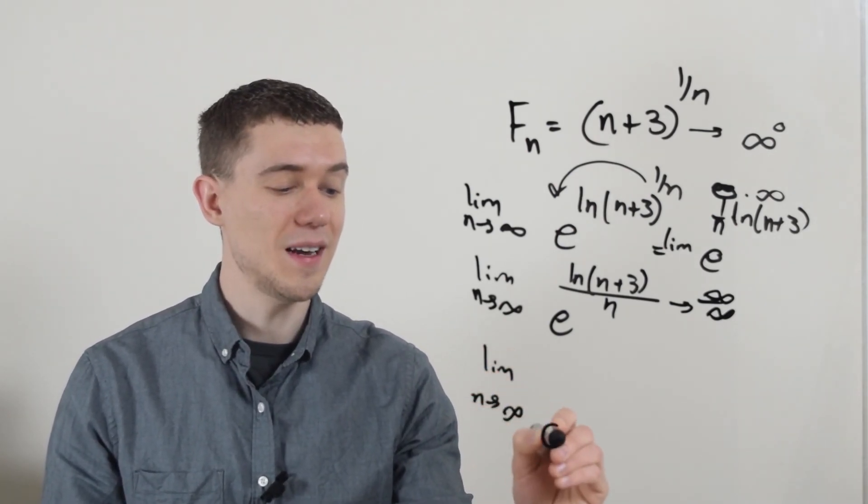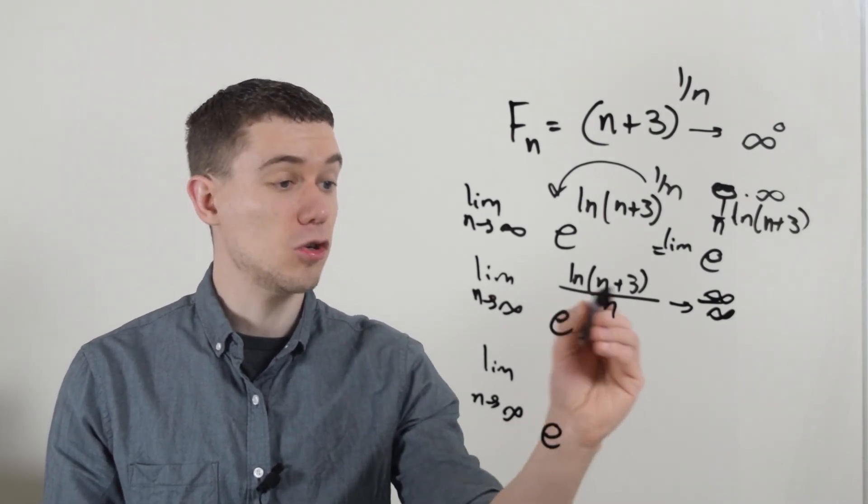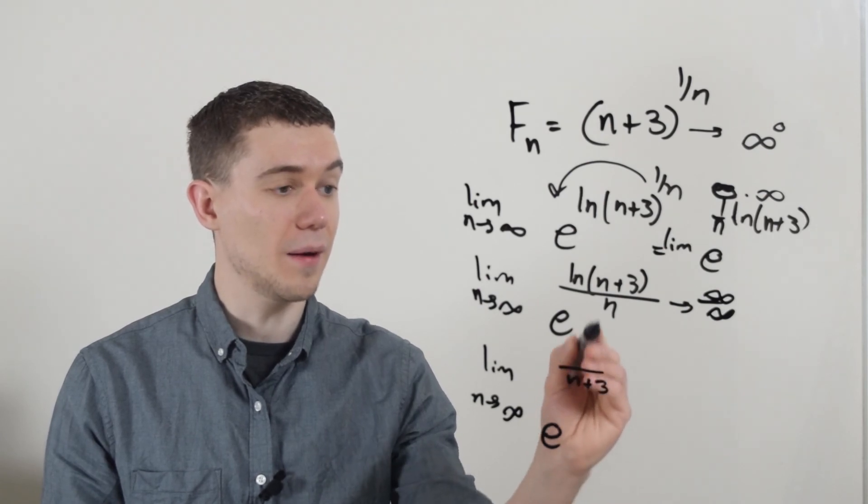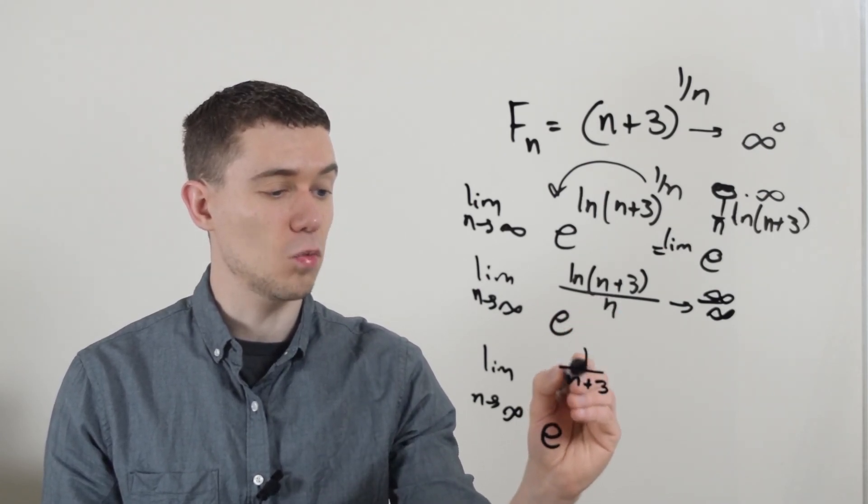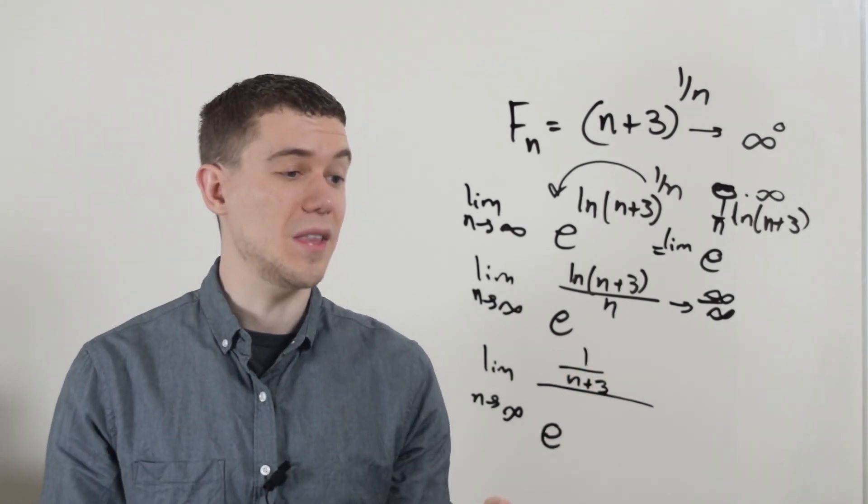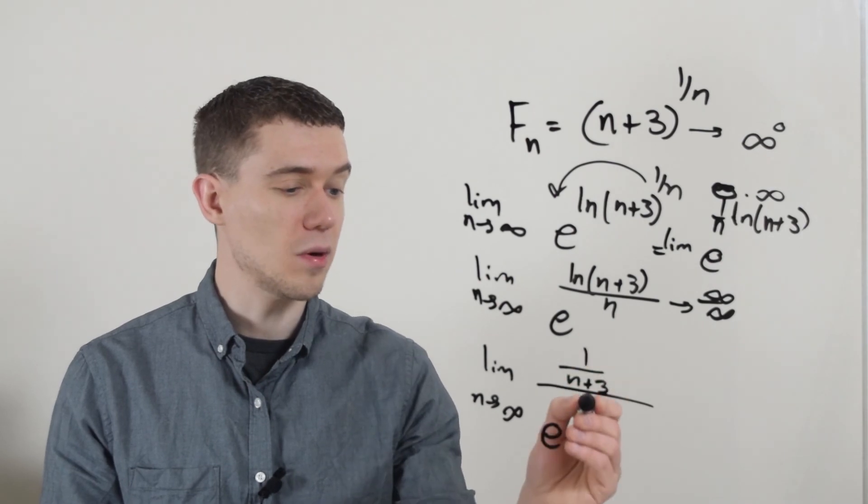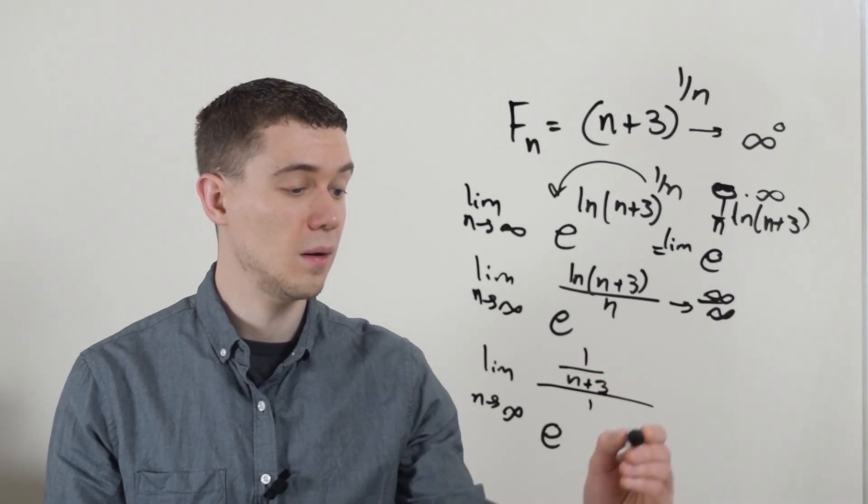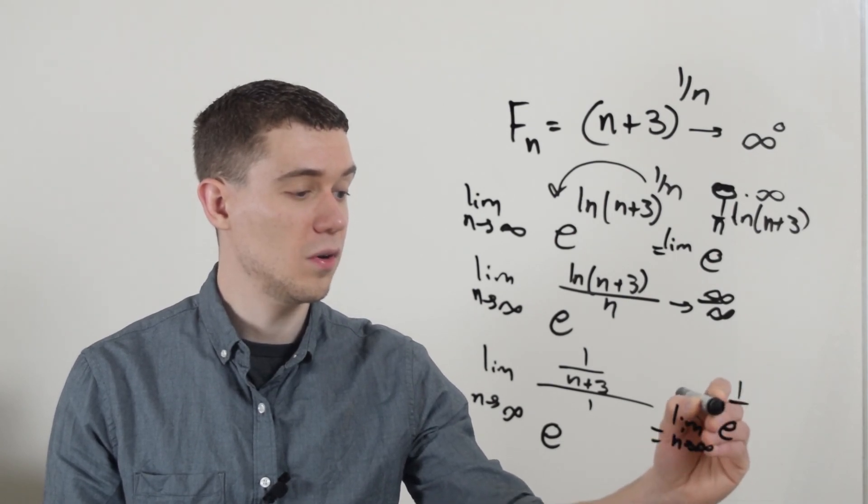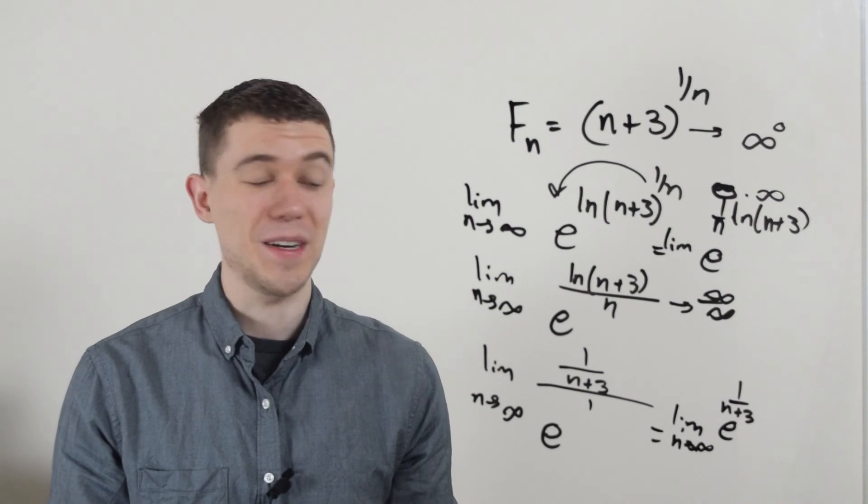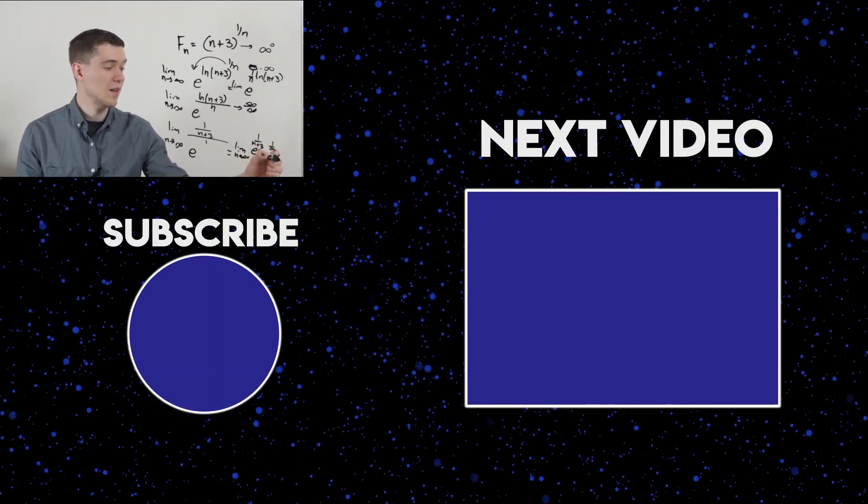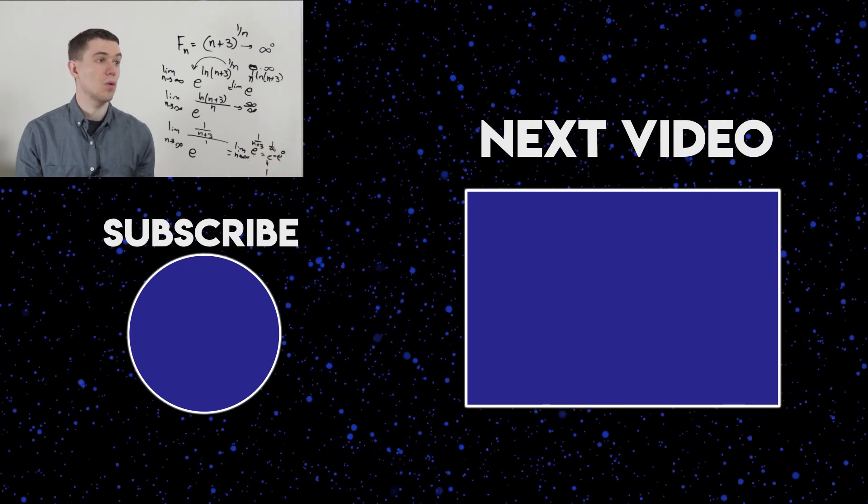I can take the derivative of the numerator, making sure I keep this e down here. The derivative of natural log, whatever's on the inside goes in the bottom, the derivative of the inside is 1 goes on the top. L'Hôpital's rule says it's all over the derivative of the denominator. The derivative of n is just 1. This is now just the limit of e to the 1 over n plus 3. I take the limit as n goes to infinity, that would be e to the 1 over infinity, e to the 0, or 1.